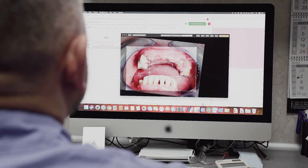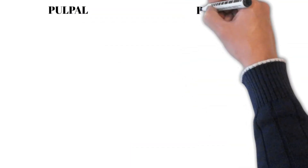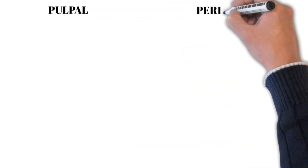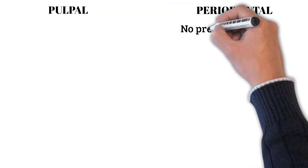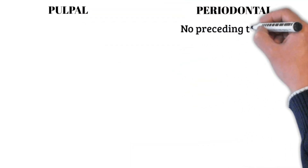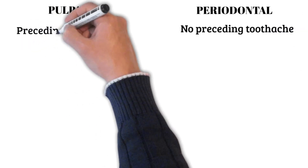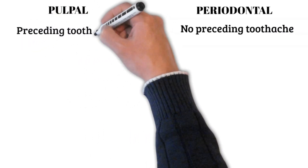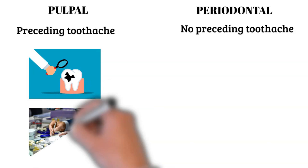So the first thing is the history. With periodontal pathology, there's usually no preceding toothache, whereas with a pulpal pathology, there may have been some toothache preceding the presentation.